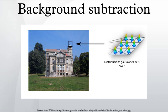The rationale in the approach is that of detecting the moving objects from the difference between the current frame and a reference frame, often called a background image or a background model. Background subtraction is mostly done if the image in question is a part of a video stream. It provides important cues for numerous applications in computer vision, for example surveillance, tracking, or human pose estimation.